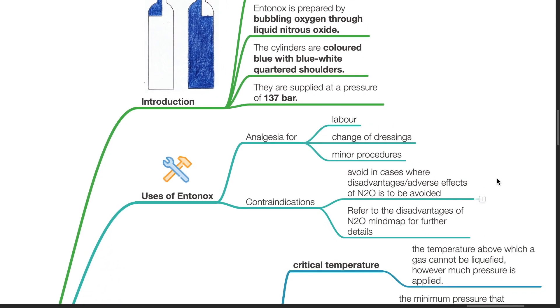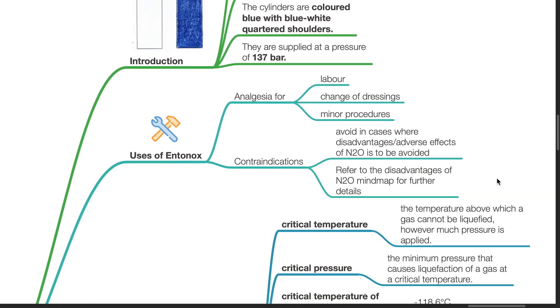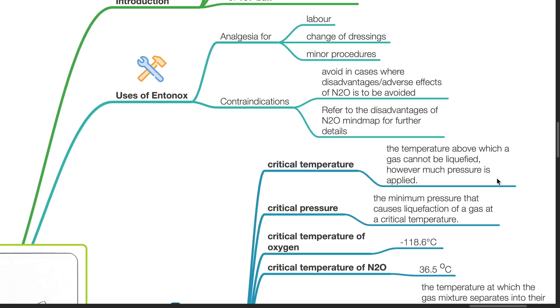Uses of Entonox: analgesia in labor, change of dressings, and minor procedures. Contraindications: Avoid Entonox in cases where disadvantages or adverse effects of nitrous oxide are to be avoided. Refer to the disadvantages of nitrous oxide mind map for further details.